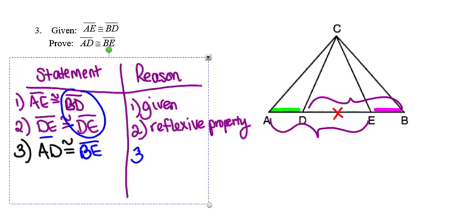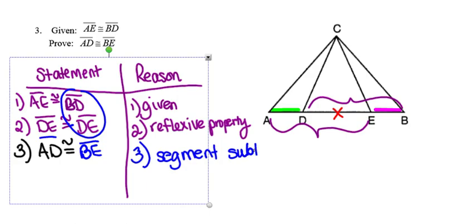The reason for this step: we talk about the geometric shapes we're performing the operation on — these are line segments — and the operation we're performing is subtraction, giving us the segment subtraction theorem.